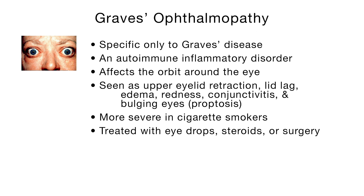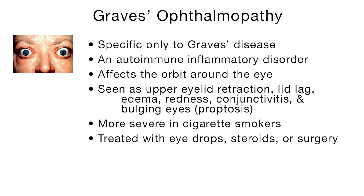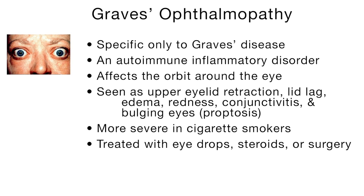Graves' ophthalmopathy is specific only to Graves' disease and is an autoimmune inflammatory disorder that affects the orbit around the eye, seen as upper eyelid retraction, lid lag, edema, redness, conjunctivitis, and bulging eyes, or proptosis. For unknown reasons, eye problems occur much more often and are more severe in patients with Graves' disease who also smoke cigarettes. Mild cases are treated with lubricant eye drops or non-steroidal anti-inflammatory drops. Severe cases are treated with steroids or orbital decompression surgery.